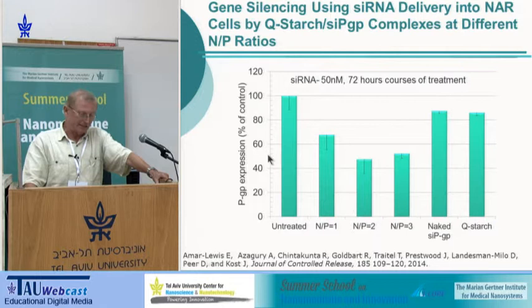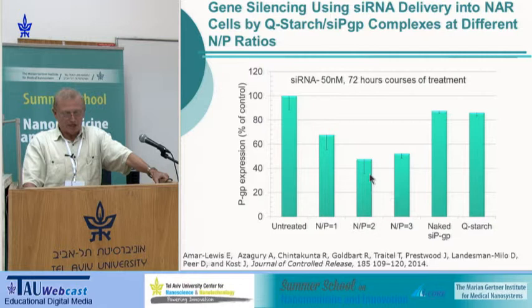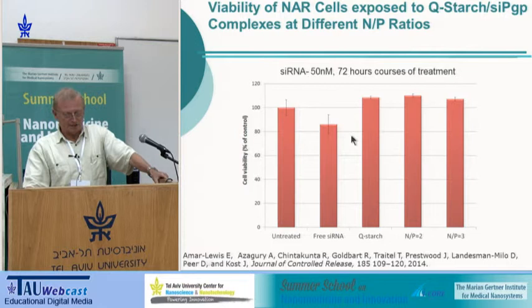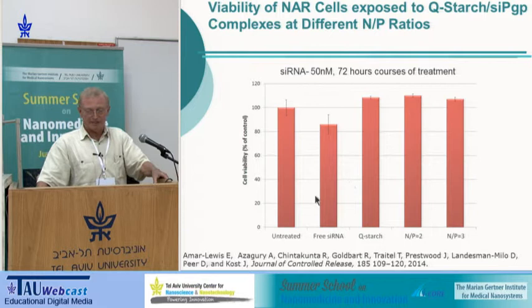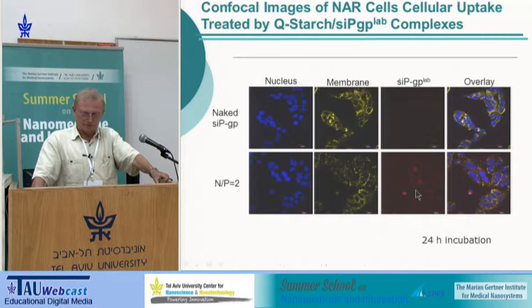Silencing of 50% was achieved, which is not yet sufficient. We are moving forward with additional experiments to improve silencing. Viability tests confirm Q-starch is safe — untreated, free siRNA, and N:P2 complexes all show good cell viability.